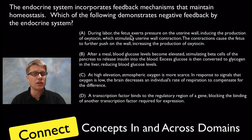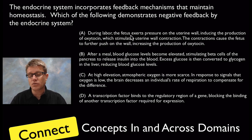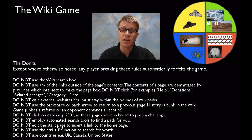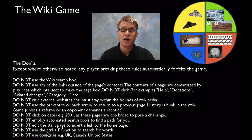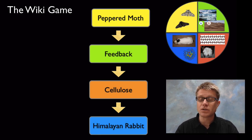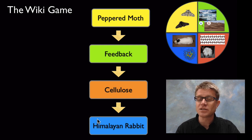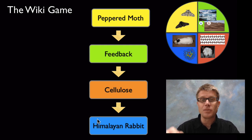The questions they give as examples of connecting across domains are not super hard. They just want you to not get stuck in the specifics when a question crosses several different domains. A good way to practice this is a game called the wiki game. You log on to Wikipedia and try to make connections between one concept and another, following only internal links — no search box, no external websites, no going back, no clicking on dates, no find tools. Try to get from concept to concept just through Wikipedia links. Could you connect from peppered moth to feedback loops to cellulose to Himalayan rabbits? It took me about 38 links — maybe you could do better and put your score in the comments.